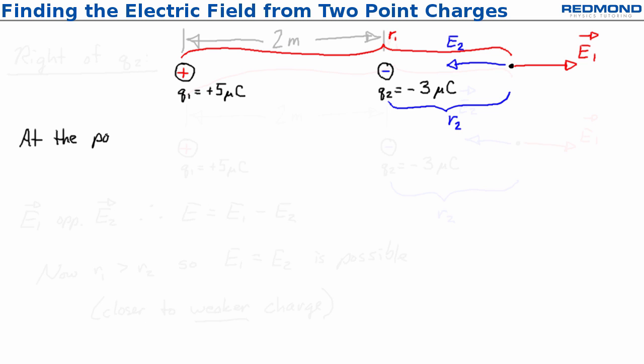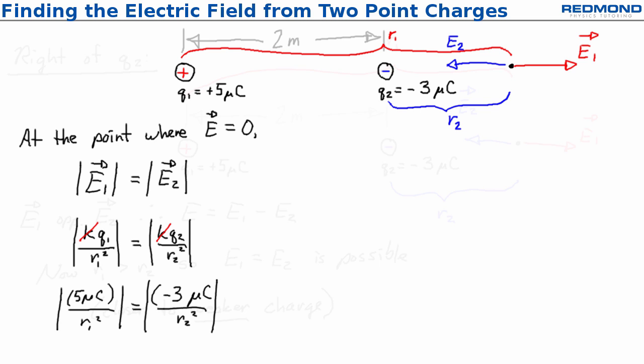At this point, where the magnitude of the net electric field is zero, the magnitude of E1 is equal to the magnitude of E2. The constant K cancels out from both sides, and when I substitute in the values, the microcoulomb units cancel out too.